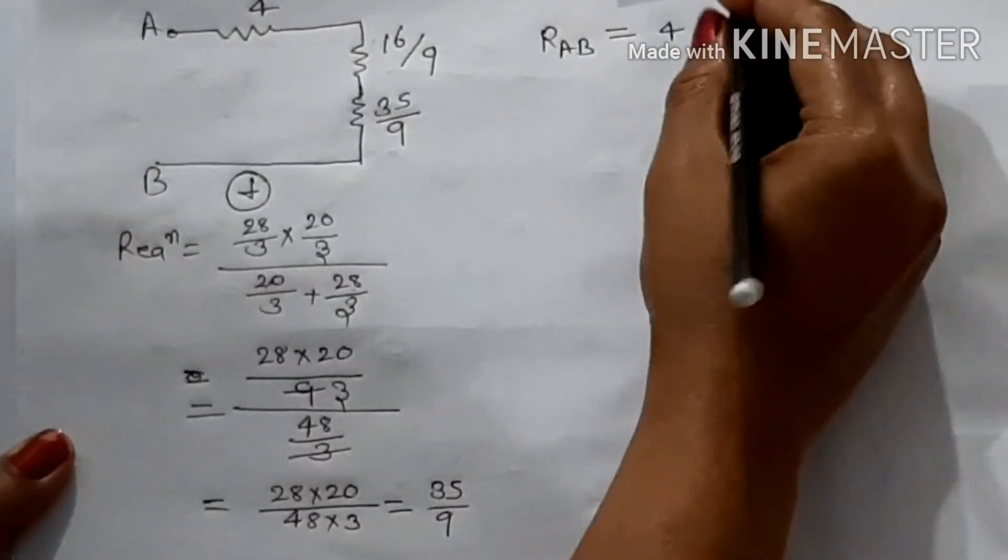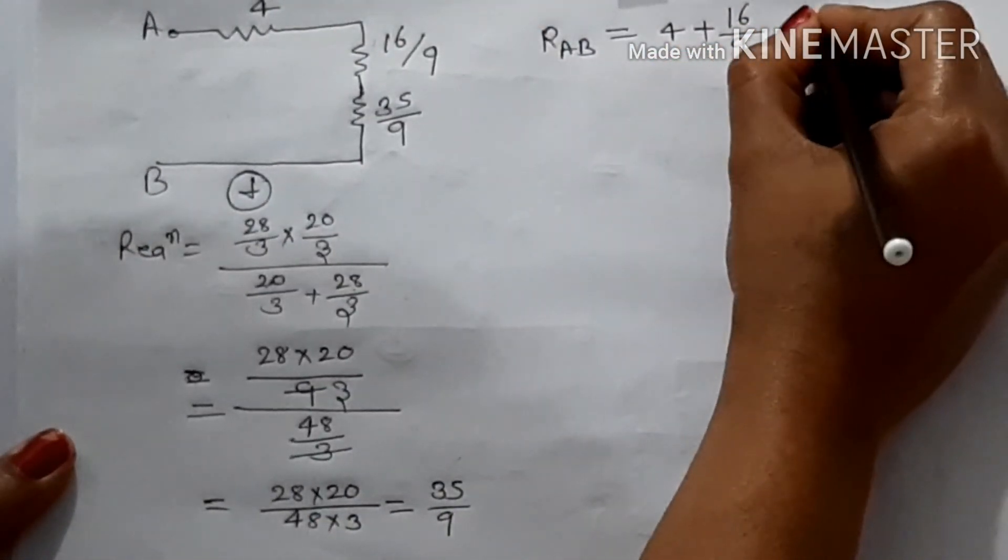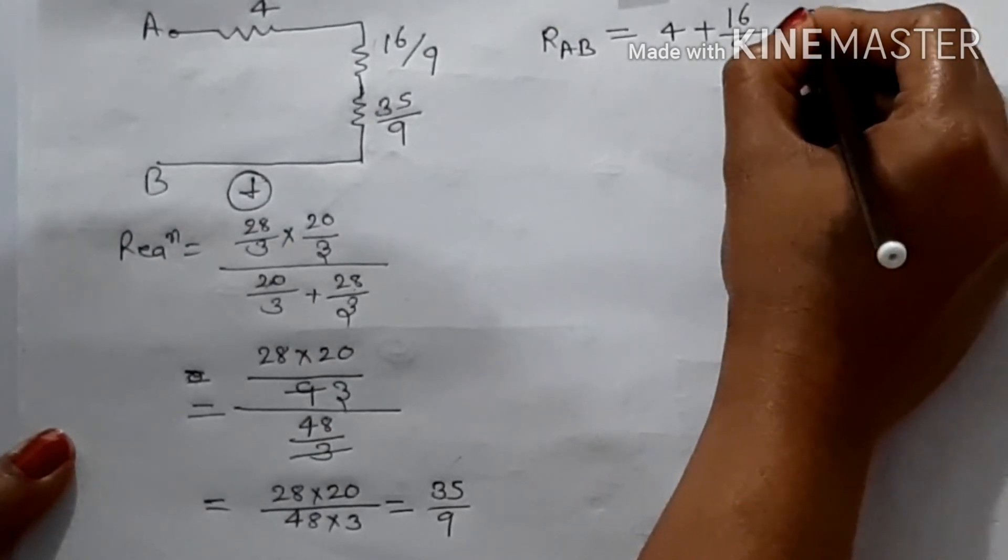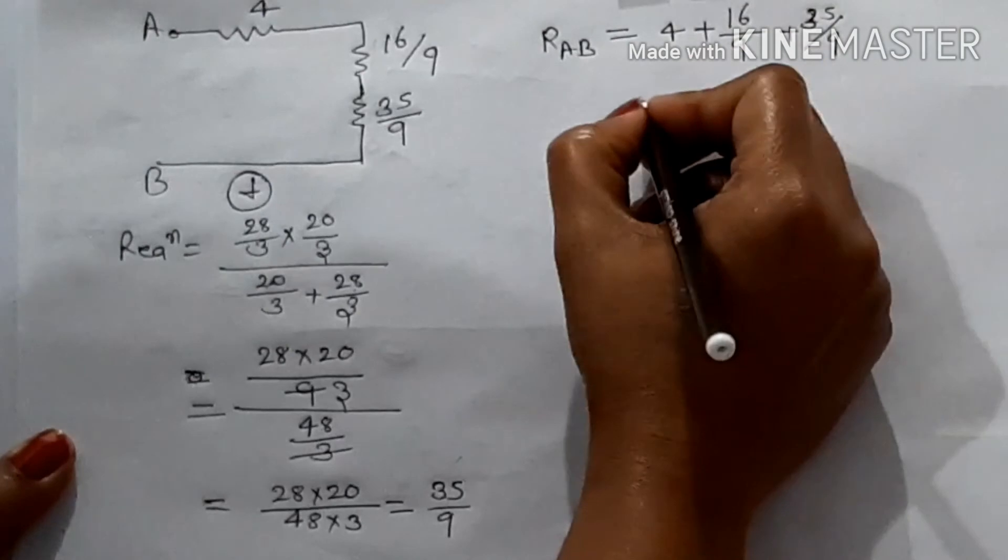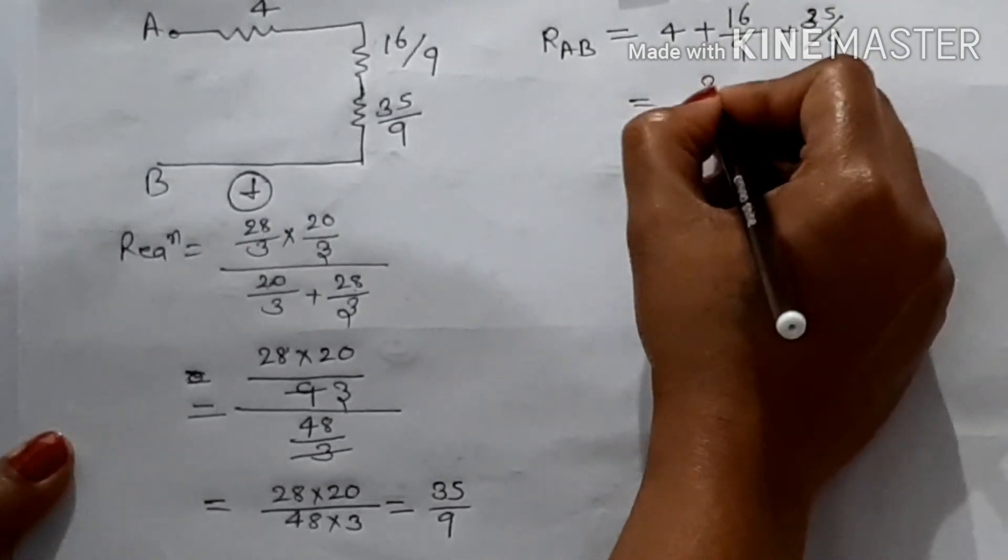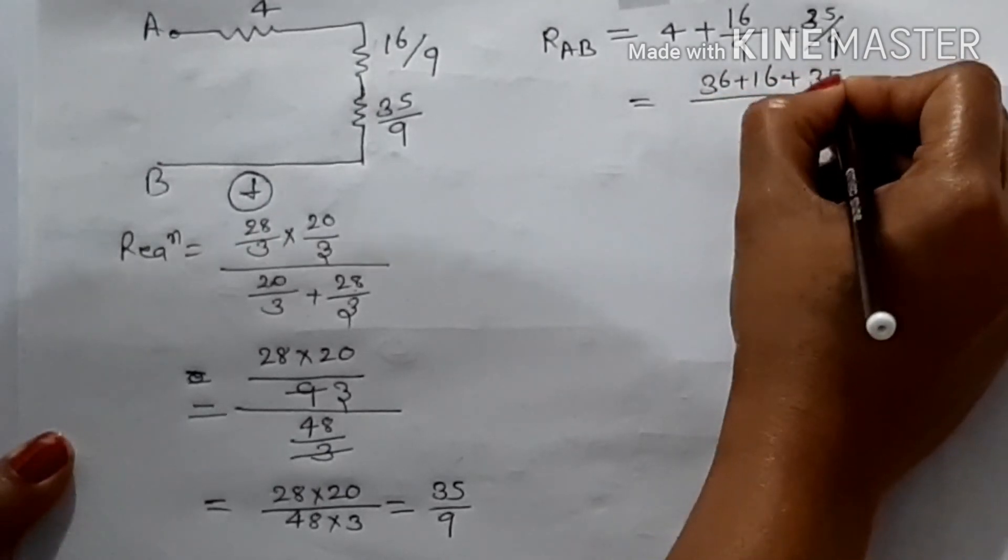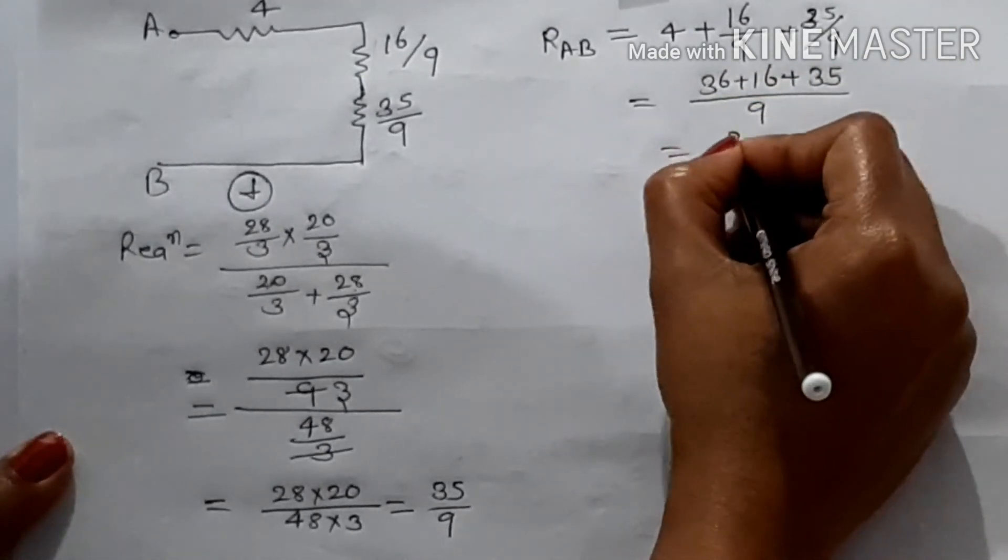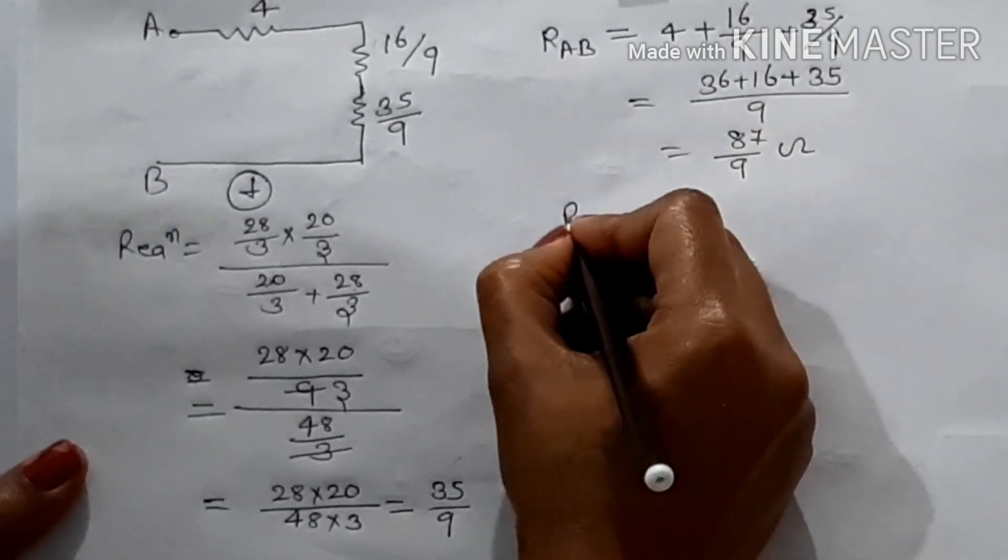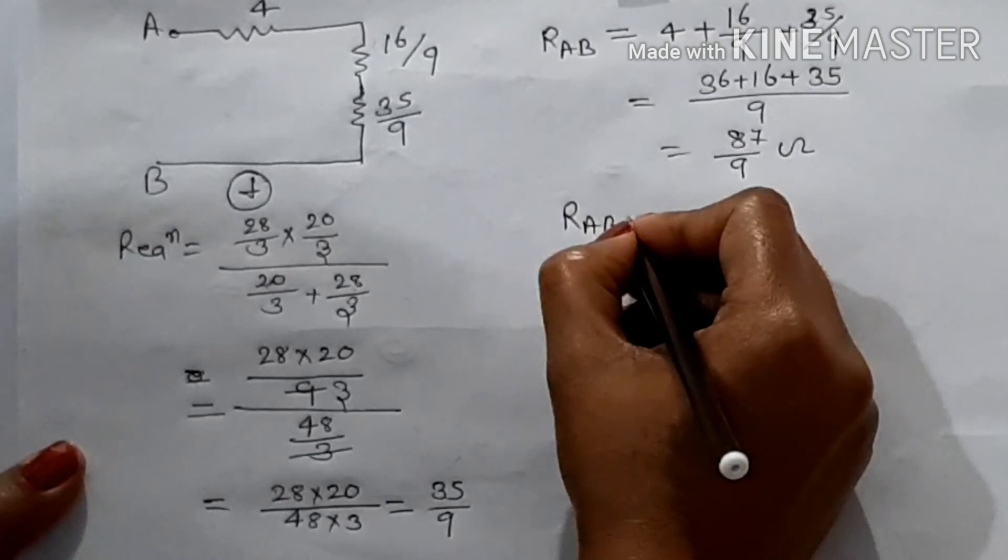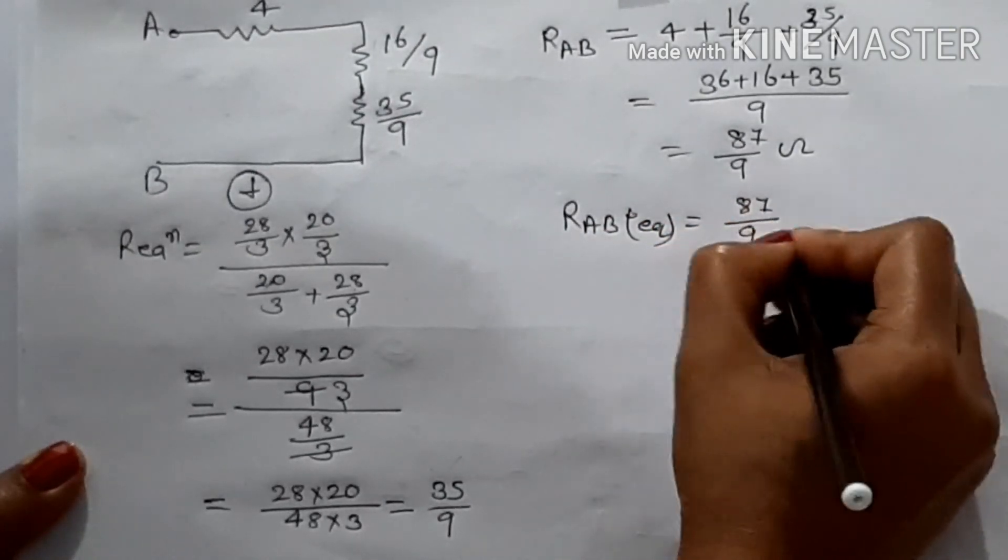RAB is 4 in this figure. So, what is R in this figure? Always add more. If we calculate, what is R connected to AB? The equivalent resistance is 87 upon 9.